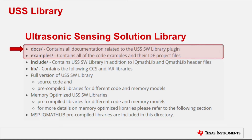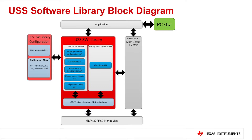The USS Software Library is broken down into four key components. The first component, available in object format, houses the algorithms responsible for calculating key parameters such as the absolute time of flight, differential time of flight, and volume flow rate. The second component is the source code portion of the library, which provides APIs to customize the majority of the ultrasonic sensing process, from calibration and configuration to the actual flow measurement.